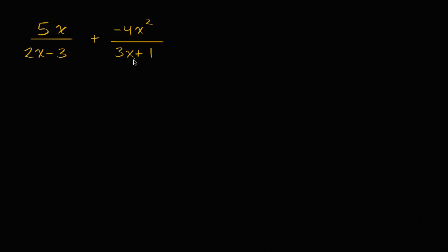And the easiest way to get a common denominator is you could just multiply the two denominators, especially in a case like this where they don't seem to share any factors. Both of these are about as factored as you can get and they don't share anything in common. So let's set up a common denominator.